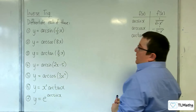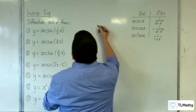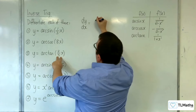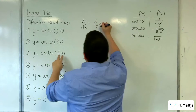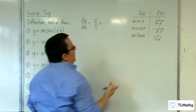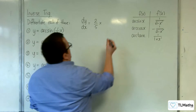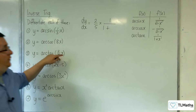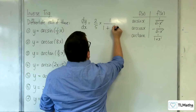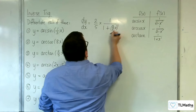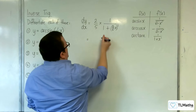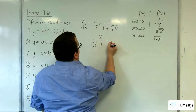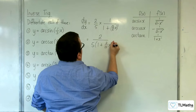Number three: y equals arc tan of two fifths x. So dy/dx — the derivative of the inside is two fifths, which comes out the front. Arc tan differentiates to one over one plus x squared, so we get one over one plus (two fifths x) squared. That gives us two over five lots of one plus four twenty-fifths x squared.